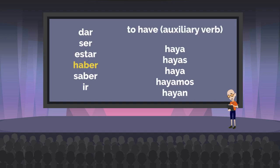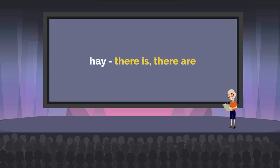That brings us on to haber, which means to have — but not in the way tener means to have. This is an auxiliary verb, like in 'I have eaten' or 'I have gone.' Our forms are haya, hayas, haya, hayamos, hayan. One of the first Spanish words I teach any beginner is hay, which comes from the verb haber. Hay is great because it means 'there is' or 'there are.' You never have to conjugate it out, and you can make sentences really quickly.